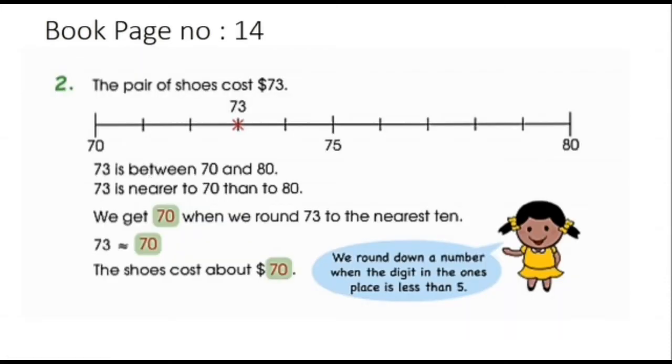Next page, page number 14, example number two. The pair of shoes cost dollar 73. Now look at this example and observe this 73 and its ones place.